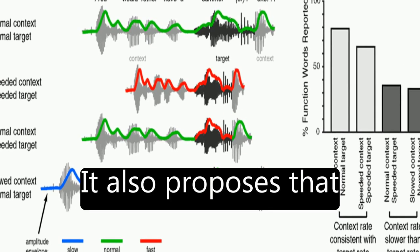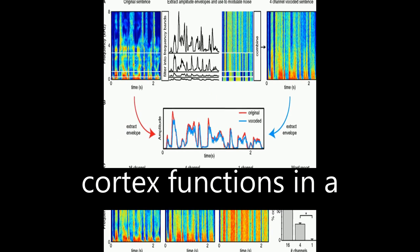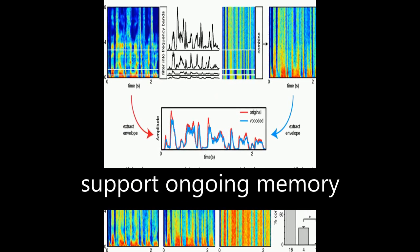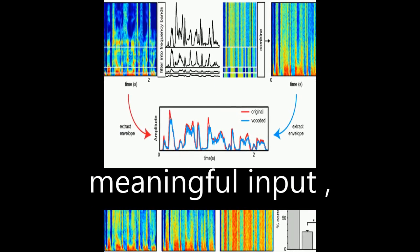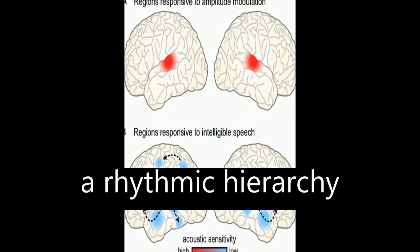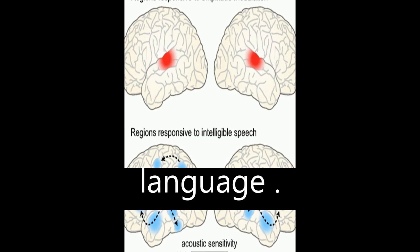It also proposes that lateral anterior temporal cortex functions in a domain-general fashion to support ongoing memory and integration of meaningful input, forming the foundation of a rhythmic hierarchy supporting spoken language.